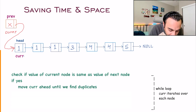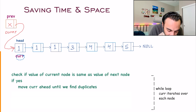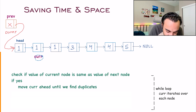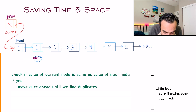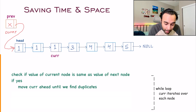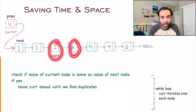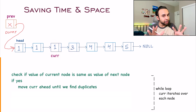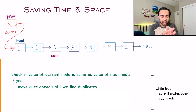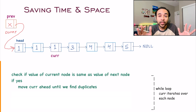At every iteration, you will check: is the value of my current node the same as the next node? Yes. Is the value the same as the next node? Yes. But once you reach a point where the value of the current node is not the same, you stop. And once you stop, you know that you have found out all of your duplicates.